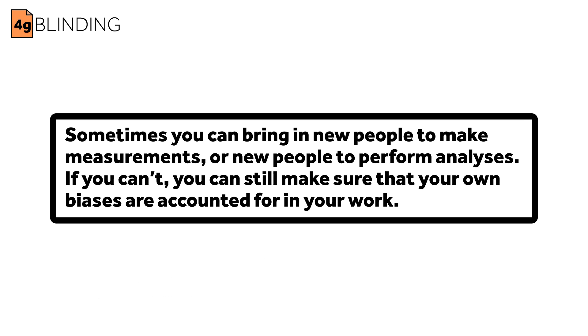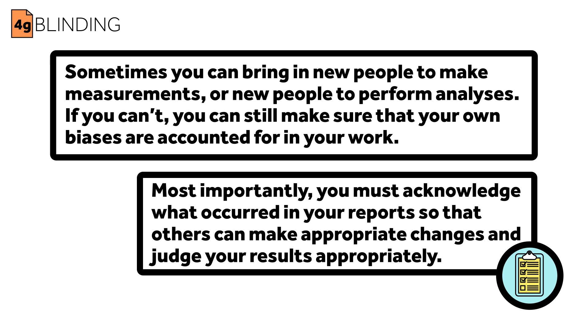Sometimes un-blinding occurs because of mistakes or issues that arise. That's unfortunate, but it's not the death knell for research. Sometimes you can bring in new people to make measurements or new people to perform analyses. And if you can't, you can still do your best to make sure that your own biases are accounted for in your work. Most importantly, you must acknowledge what occurred in your reports, so that others can make appropriate judgments. Scientists of all stripes should be blinded to their experiments as much as possible, even those that never work with human beings. It's one of the best and most powerful ways to make sure your biases don't creep into your work.